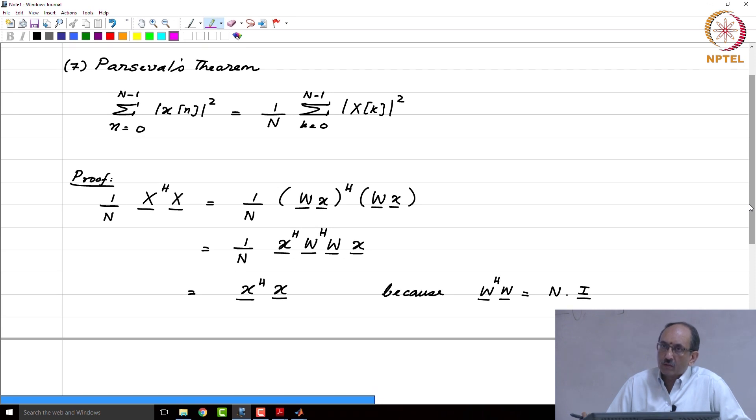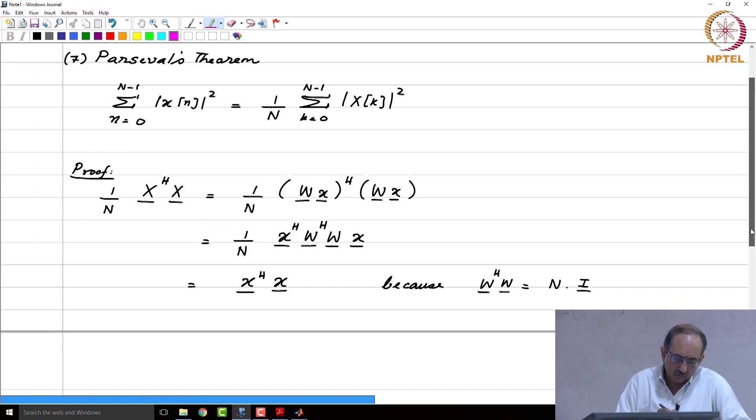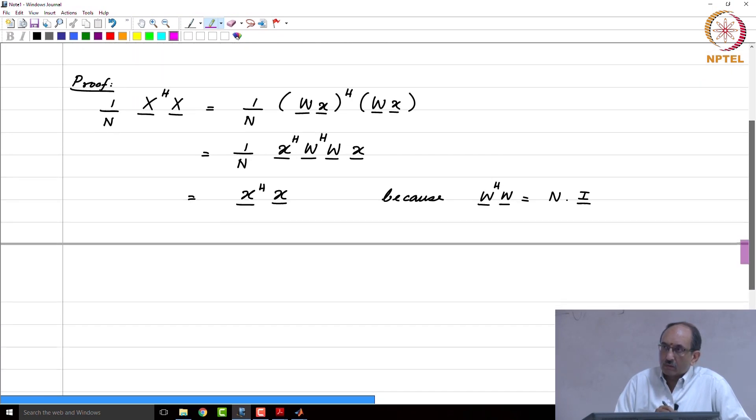So these are norm preserving transforms. And the DFT also, if you recall the Parseval's relationship in the DFT case, again you can split that 1 over 2 pi scale factor which was there in the inverse transform, you can split it as 1 over root 2 pi in the forward and inverse transform and in which case it will be exactly norm preserving.